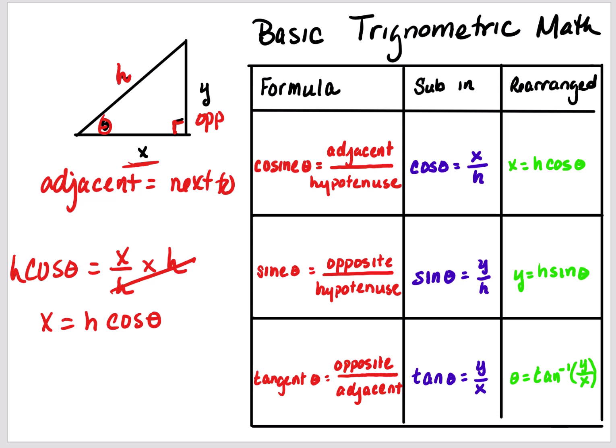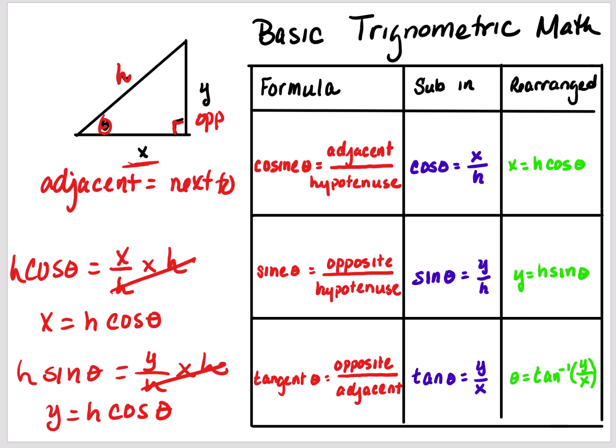Sine theta is opposite over hypotenuse. Since y is opposite the theta, sine theta is equal to y over h. I can solve for y by multiplying each side by h, so y is equal to h sine theta.